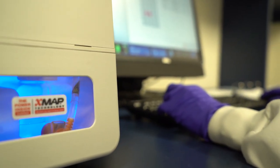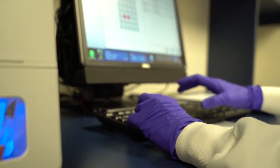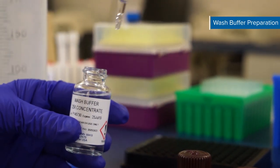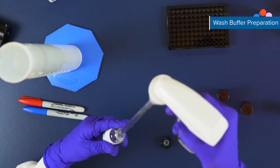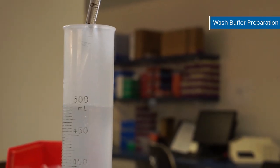Once your instrument is ready and your reagents have warmed to room temperature, prepare your wash buffer by adding 20 milliliters of wash buffer concentrate to 480 milliliters of deionized or distilled water in a graduated cylinder to yield 500 milliliters of wash buffer.